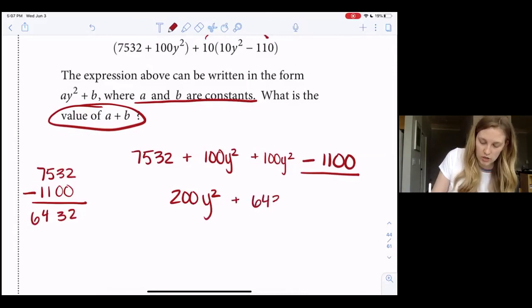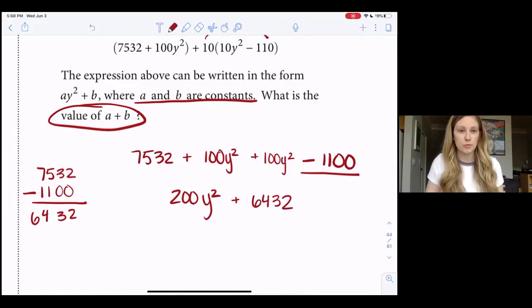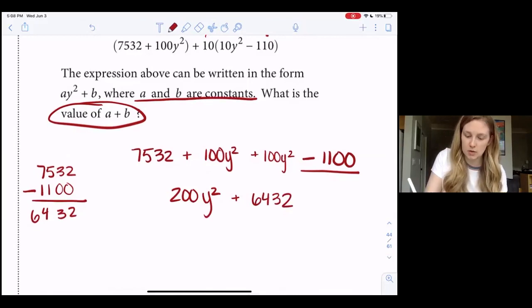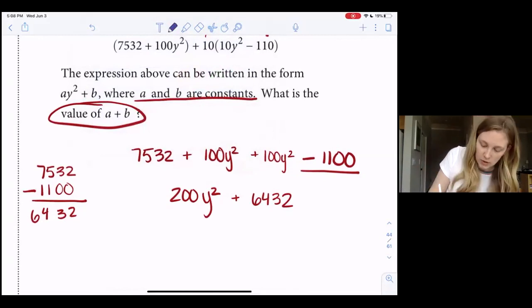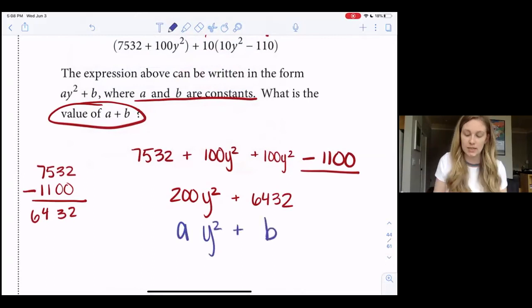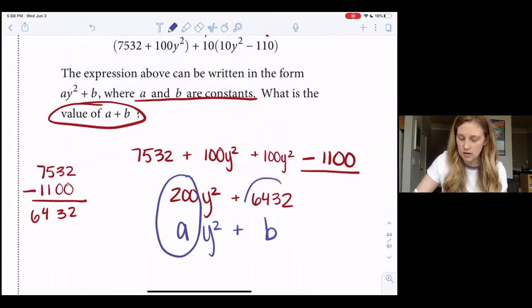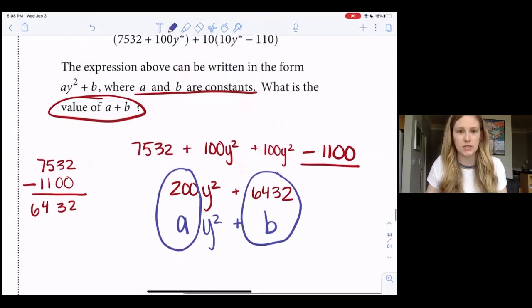So now you'll notice, and I'm going to write this in a different color, the format of what I just wrote matches the form that the question gave us where it was ay² + b. So that means that a is 200, and then this kind of funky number 6432 is b.